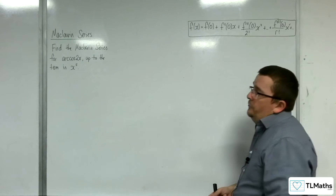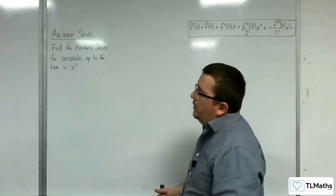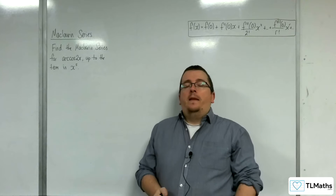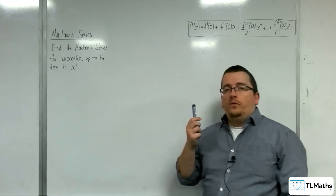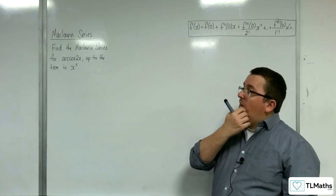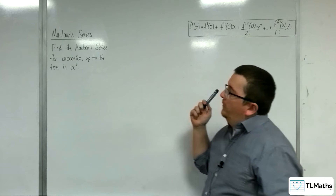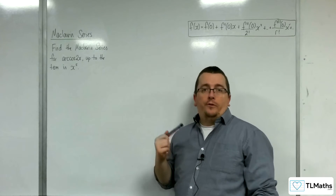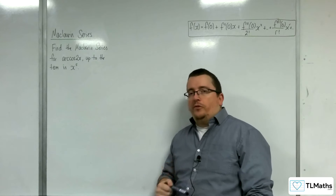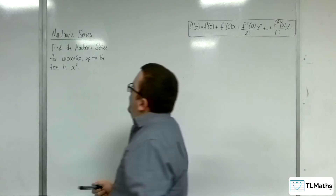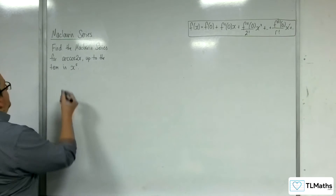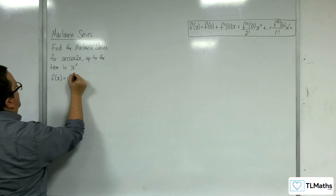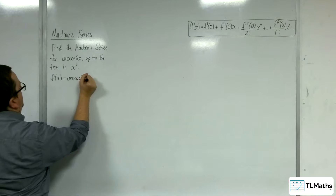In this video, I'm going to find the Maclaurin series for arccos(2x) up to the term in x to the 5. I'm going to go through two different ways of doing this — the full Maclaurin series first, and then an alternative way. So the first thing is f(x) equals arccos(2x).